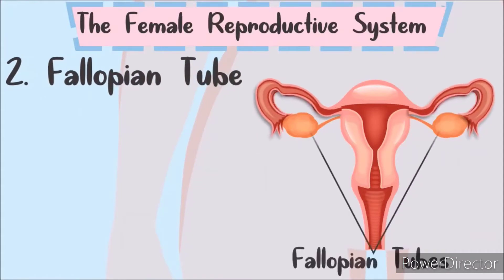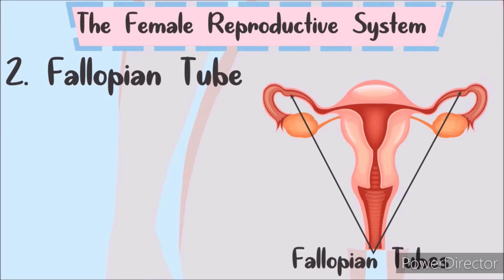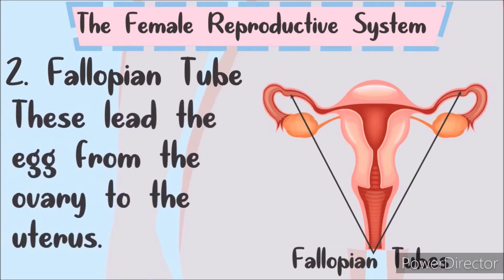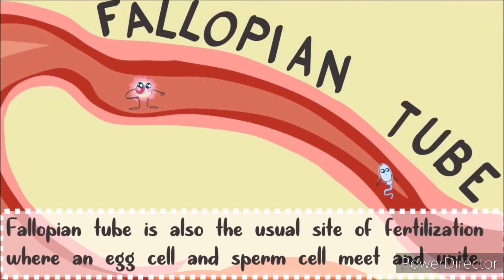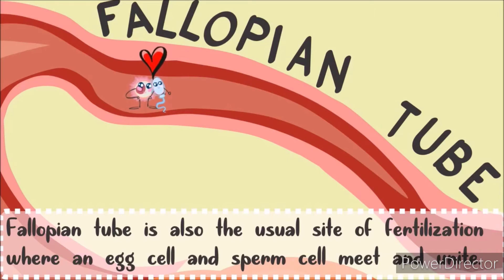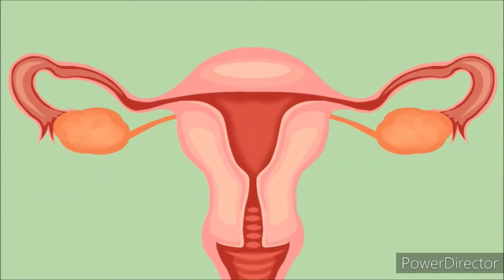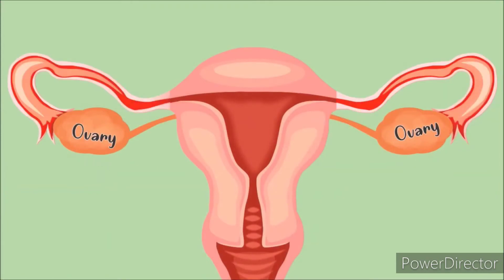Now, what is the fallopian tube? This is the fallopian tube. It leads the egg from the ovary to the uterus. This is also the usual site of fertilization, where the egg cell and sperm cell meet and unite. Female humans have two fallopian tubes, each connecting an ovary to the side of the uterus.